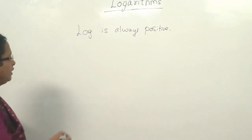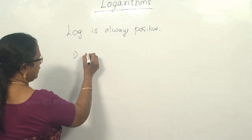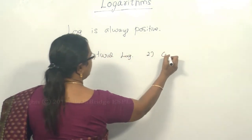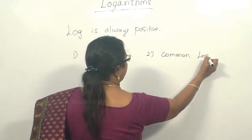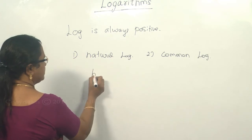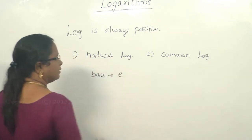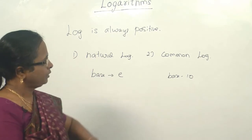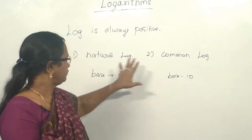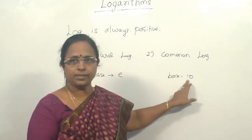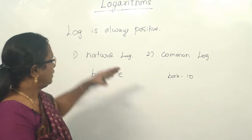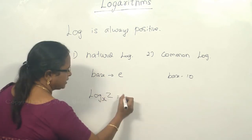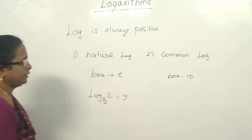Logarithm is always positive. There are two types of logarithms: natural logarithm and common logarithm. In natural logarithm the base is e, and in common logarithm the base is 10. You can also have any other base — as in the earlier example, log of z to the base x equals y — but the two common ones are base e and base 10.